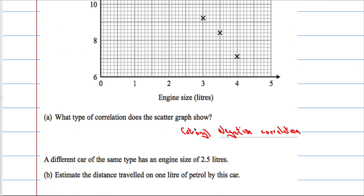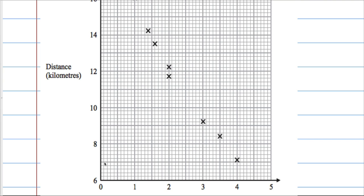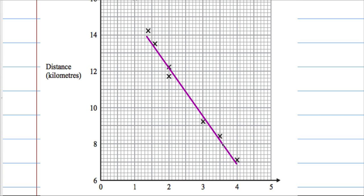A different car of the same type has an engine size of 2.5 litres and we have to estimate the distance travelled on one litre of petrol. In order to do this, we need to estimate from our scatter graph, so what we need to do is draw a line of best fit. Take your ruler and draw a straight line doing it by eye, roughly around there.